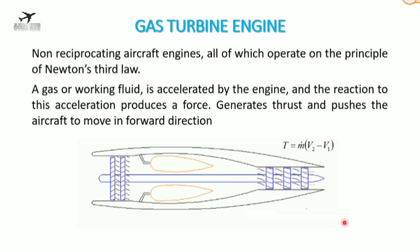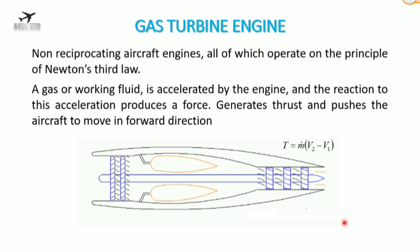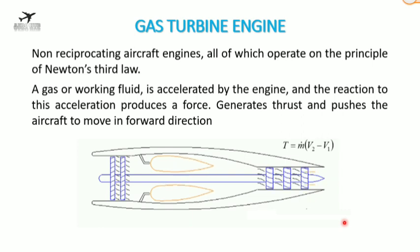Non-reciprocating aircraft engines, or gas turbine engines, all operate on the principle of Newton's third law, which states that for every action there is an equal and opposite reaction. A gas or working fluid is accelerated by the engine, and the reaction to this acceleration produces a force that generates thrust and pushes the aircraft forward.